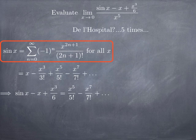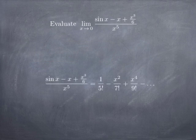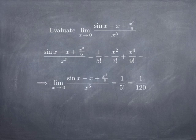We can factor out x⁵, leaving 1/5! minus x²/7! plus x⁴/9! and so on. So when we look at sin(x) minus x plus x³/6, divided by x⁵, what remains is 1/5! plus a bunch of terms with positive powers of x. As x goes to 0, all those additional terms go to 0, and therefore the limit is 1/5!, which is 1/120.